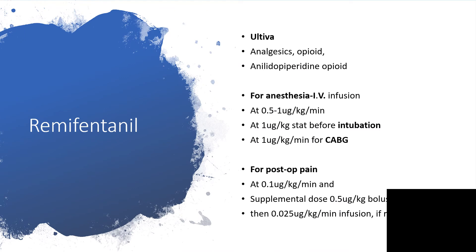The trade name is Ultiva. It's a very strong agonist of the class of opioid anilidopiperidine group. For anesthesia, you can give intravenous infusion at the rate of 0.5 to 1 microgram per kilogram per minute, and it could be given at the rate of 1 microgram per kilogram as a start.